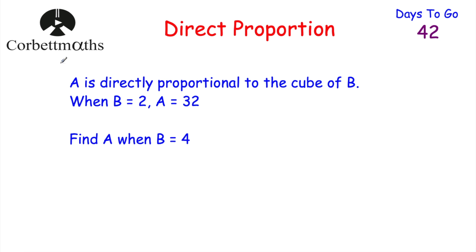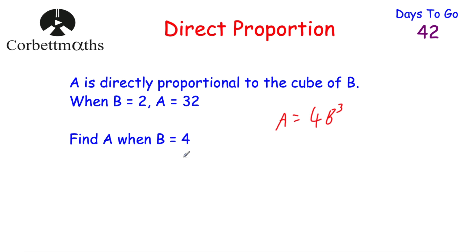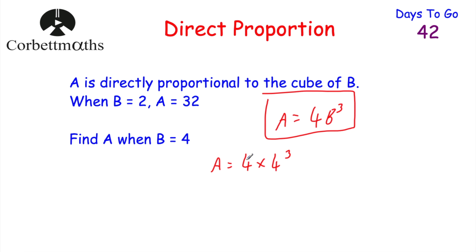Now, using the same information, we've been asked to find A whenever B is equal to 4. Our key formula is A equals 4B cubed. Quite often proportion questions have a part A — express A in terms of B — and a part B — find A whenever B equals something. So replacing B with 4: A equals 4 multiplied by 4 cubed. 4 cubed is 64, so A equals 4 multiplied by 64, which equals 256. So A is equal to 256. Well done if you got that.